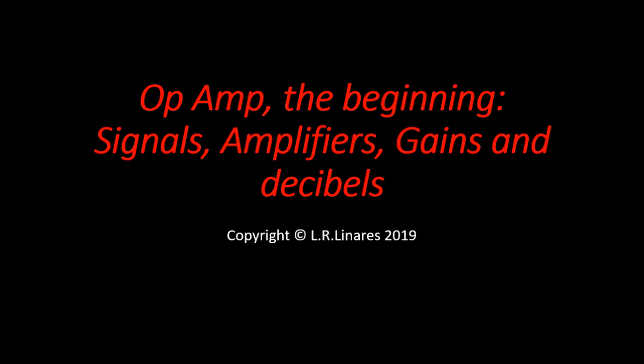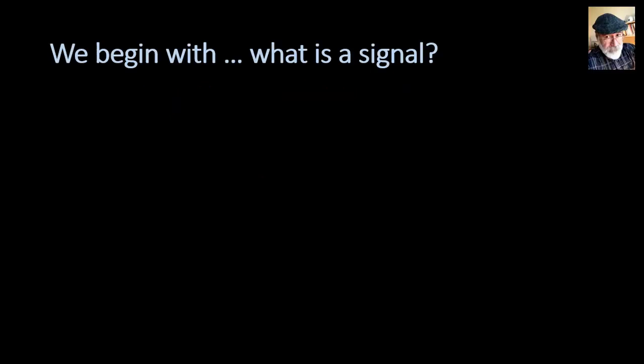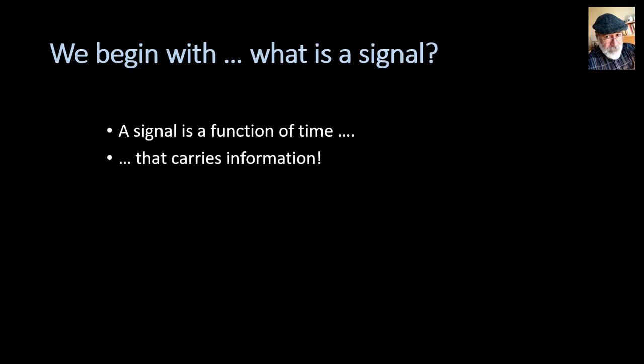What is an amplifier? Amplifier behaviors are defined, among other things, by their gains given in decibels. But amplifiers would not exist were it not for the presence of signals, so it's necessary that we begin answering the question: what is a signal? A signal, according to Wikipedia, is a function of time — but a very special function of time. It is a function of time that carries information.